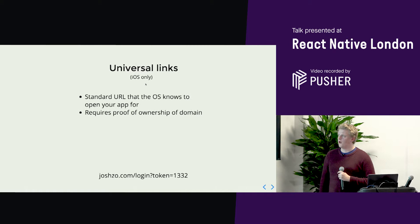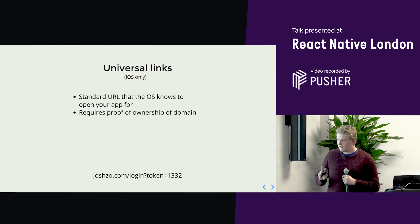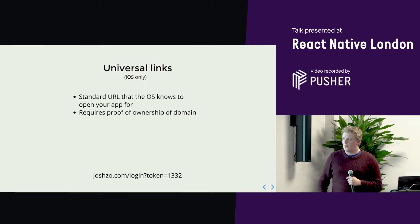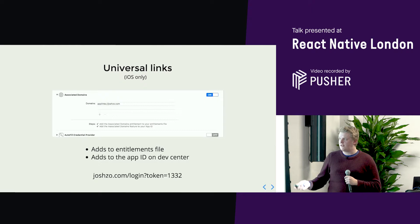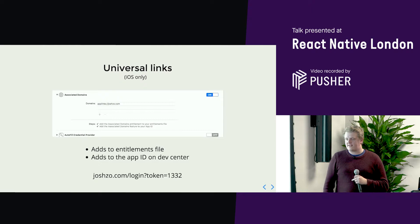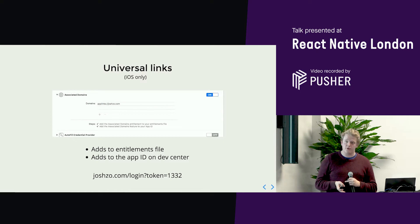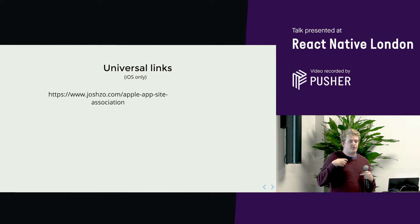Universal links — these are standard URLs, like HTTP, so something like www.joshso.com/login. However, you need to prove ownership of the domain, otherwise anyone could say 'when people go to Google, load my app,' which nobody wants. For universal links on iOS, you have to configure Xcode and use 'applinks:joshso' — 'app links' specifying the type of associated domain. You add it to your entitlements file, which adds it to the app ID on Dev Center, so it's a specific entitlement bundled with your app ID.